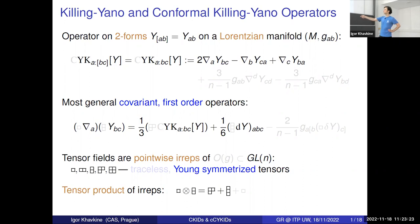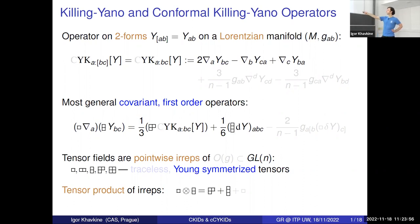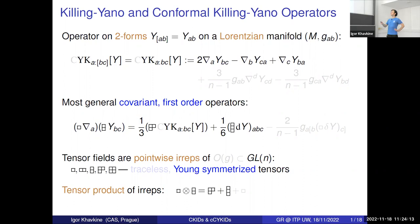When you have a tensor with particular symmetry and take its derivative, the representation-theoretic decomposition corresponds to a tensor product where you associate the vector representation to the derivative. Taking a two-form times a vector representation decomposes into two pieces: the completely anti-symmetric tensor with three indices (the exterior derivative), and whatever is left over — denoted by the hook Young diagram. The hook piece is exactly the Killing Yano operator.